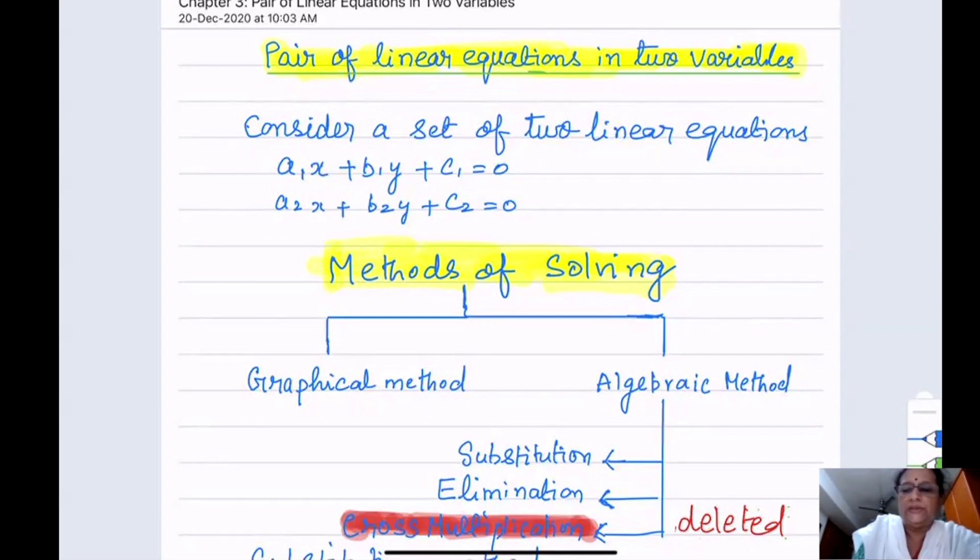The two equations are of the form a1x plus b1y plus c1 equals 0, a2x plus b2y plus c2 equals 0. These two are the pair of linear equations in two variables.